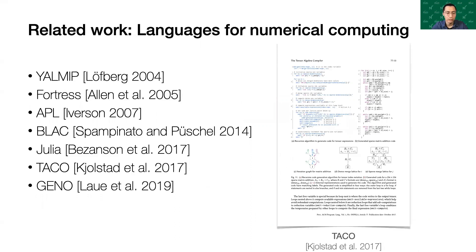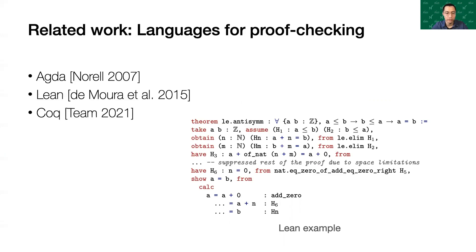Other related work includes languages for numerical computing, such as TACO. Languages for proof checking specify derivations, not formulas. Some of these languages also embrace Unicode to look like math, as we do.